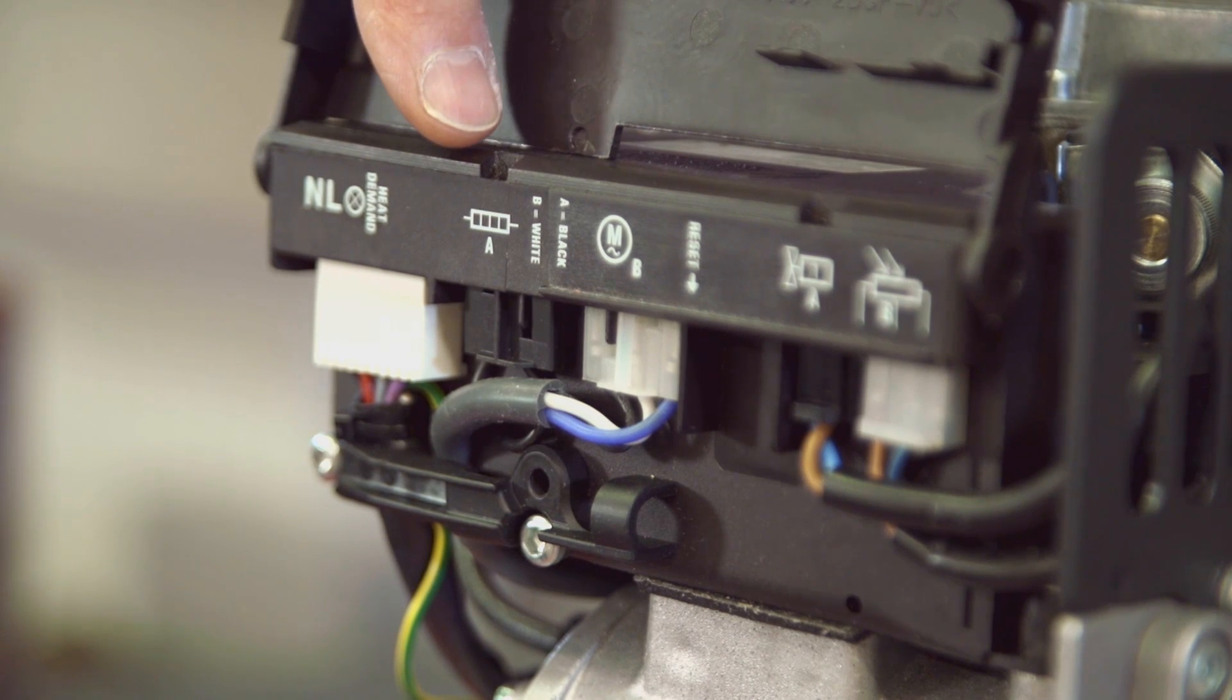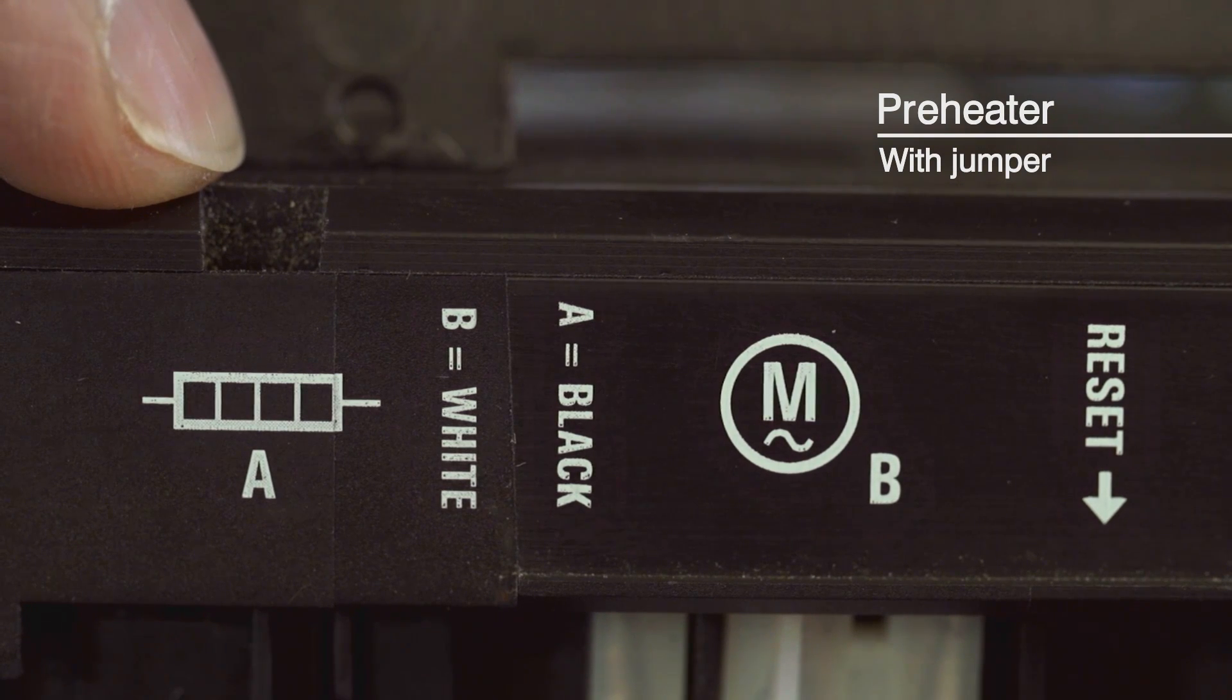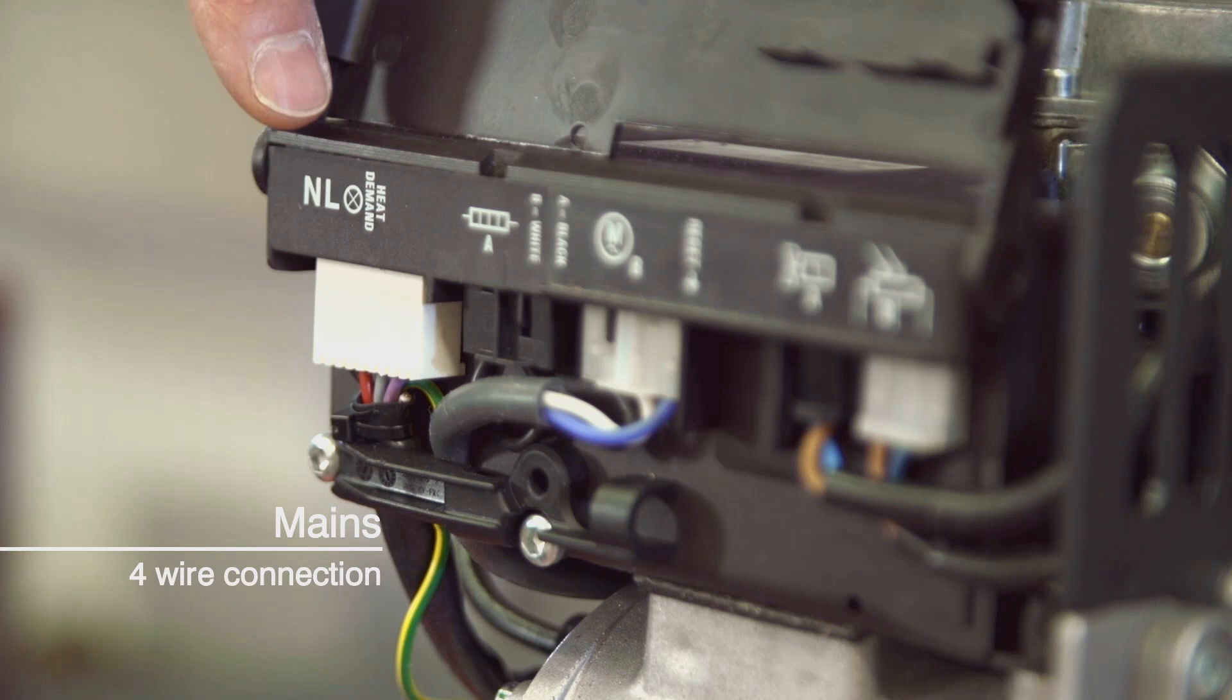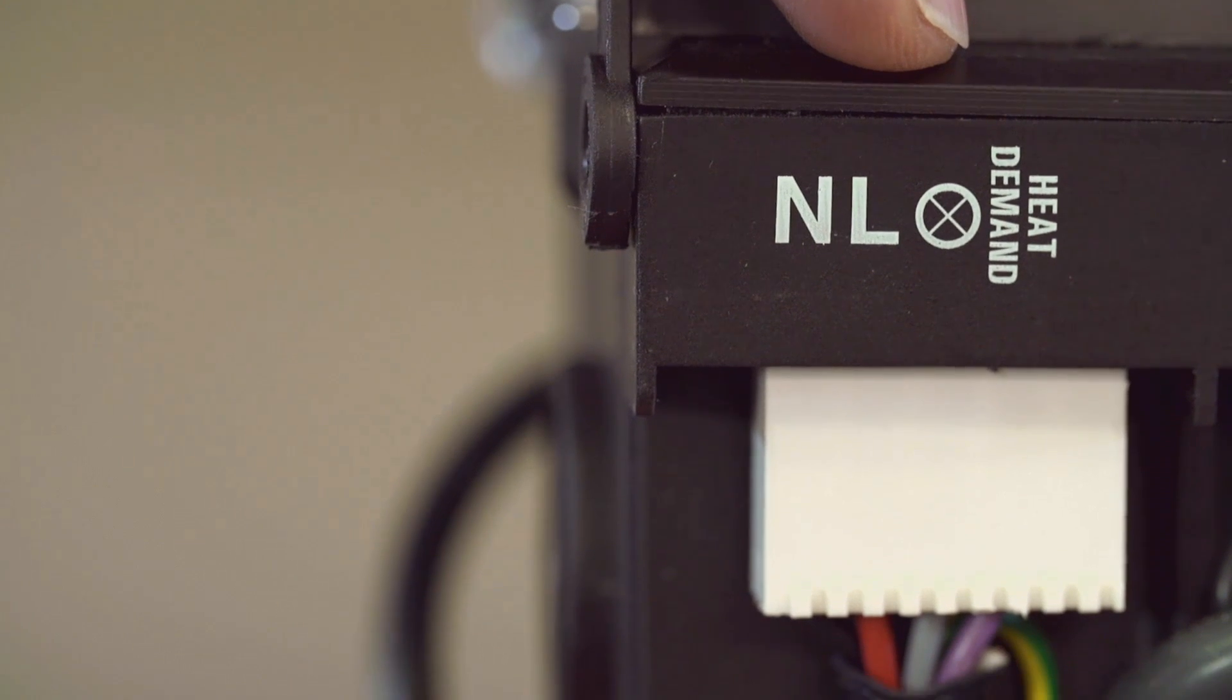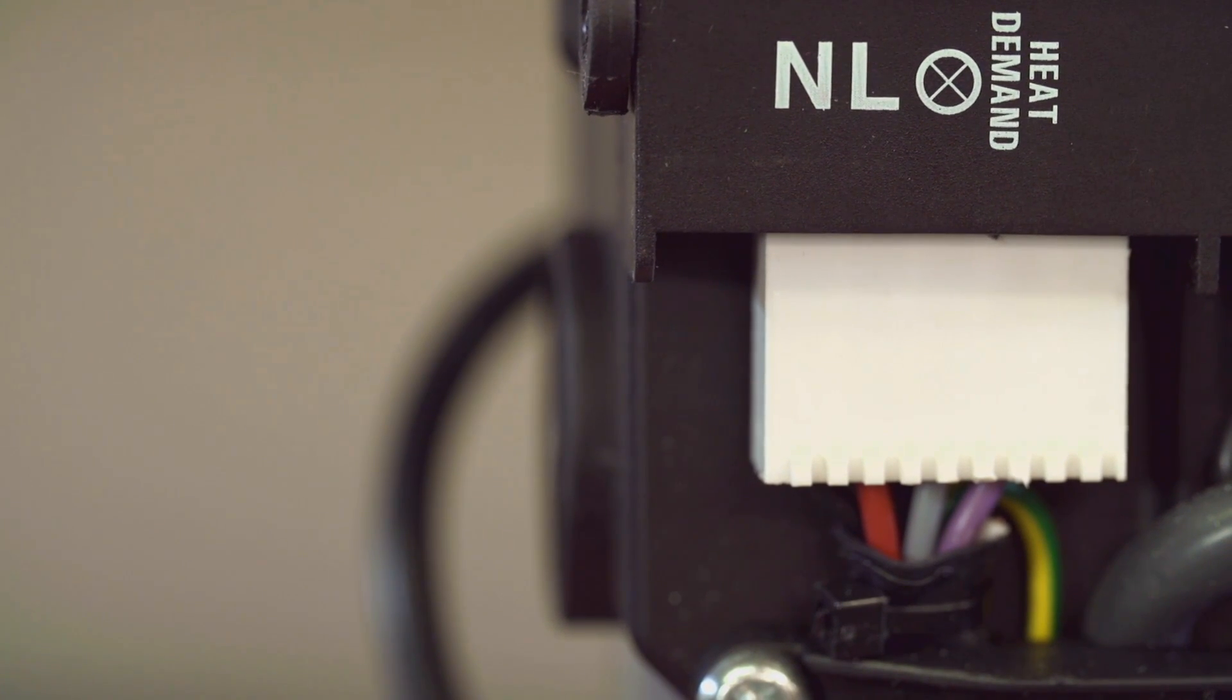This is the preheater connection fitted with a jumper as no preheater is fitted to this burner for the UK. And finally there's the mains connection. This is now a four wire connection as the burner needs both a permanent live for the post purge operation and a switched live to start the burner when there is a demand for it to fire.